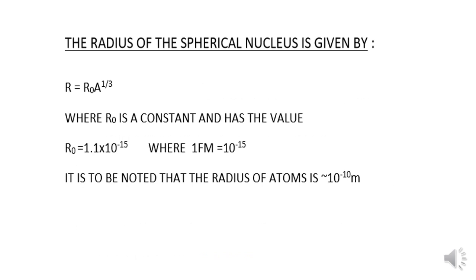The radius of the spherical nucleus is given by the formula R equals R0 A to the power of 1 over 3, where R0 is a constant and has its value 1.1 into 10 raise to minus 15 meters. This 10 raise to minus 15 meters counts to be 1 fermi. The radius of the atoms is 10 raise to minus 10.